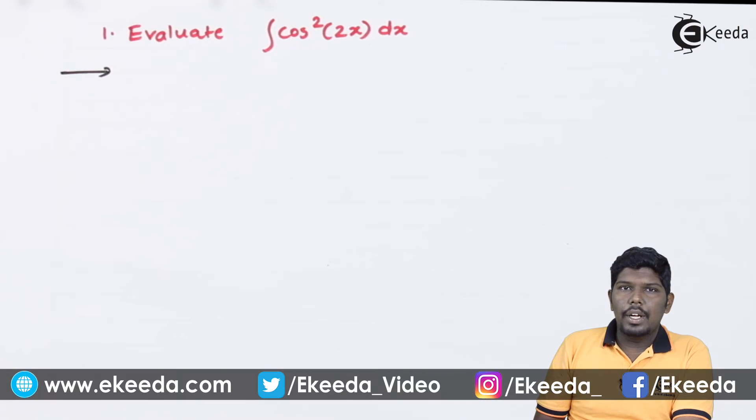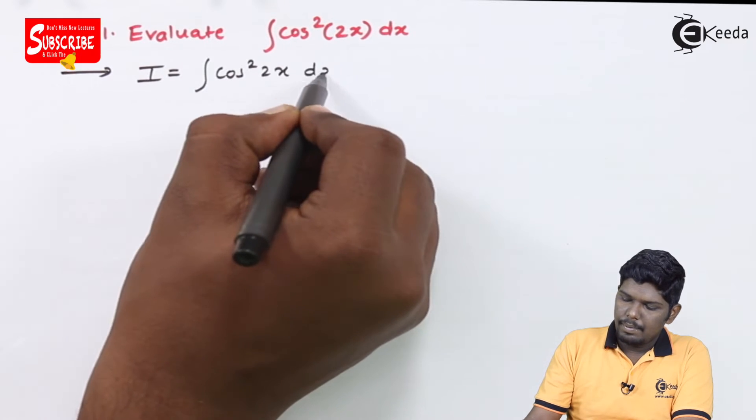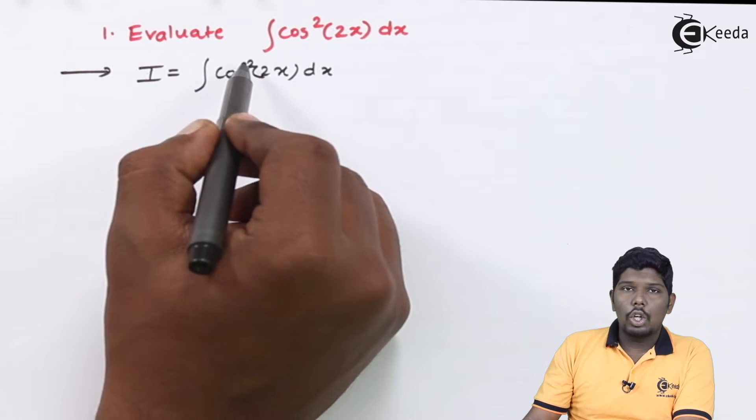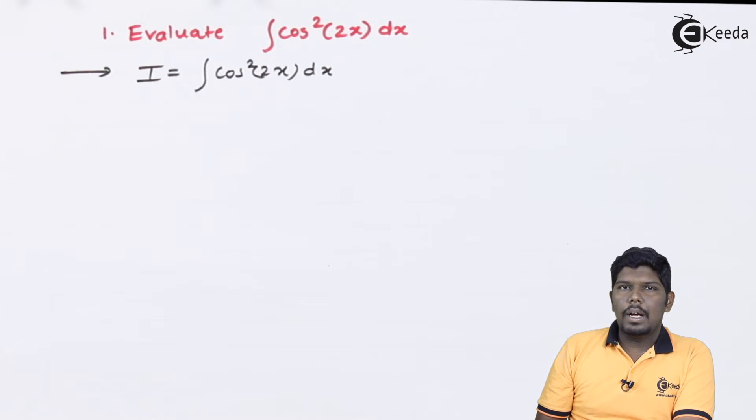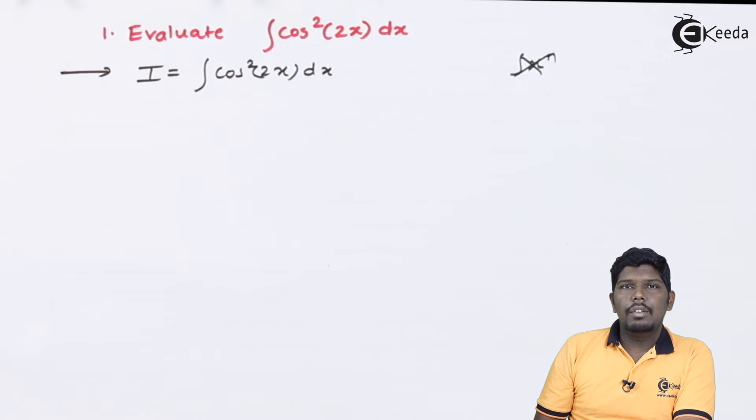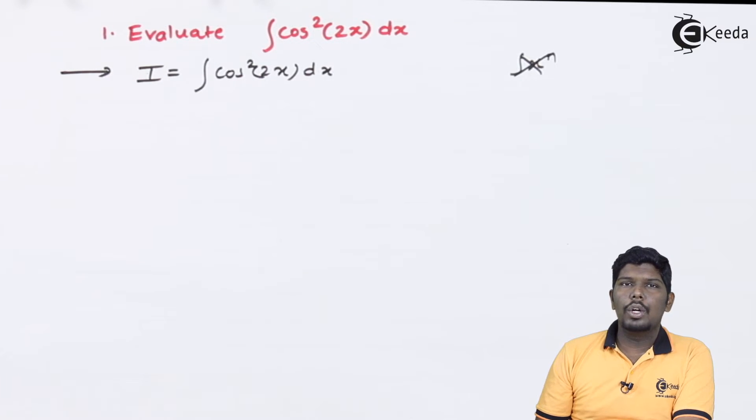Evaluate integral cos square 2x dx. Now whenever we have trigonometric functions with powers, we have here cos square 2x. This cannot be compared with integral x raise to n. As in integration, we cannot compare a different type of function with another type of function. Therefore, in this case, we need to use certain trigonometric formulas in order to convert cos square 2x in terms of cos x or sin x so that we can further integrate it.